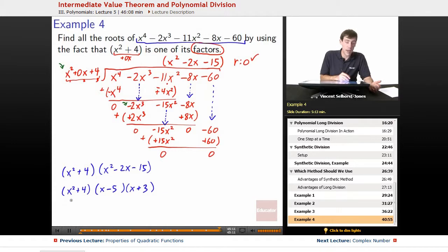So at this point, we set everything to 0. x squared plus 4. That will provide no answers. So x squared plus 4 equals 0. So nothing there. There's no answers there. x minus 5 equals 0. Turn this one in. That gets us x equals 5.